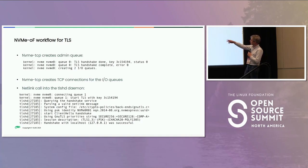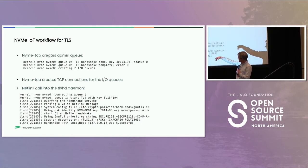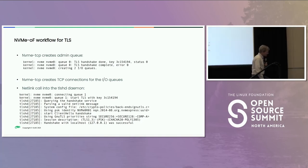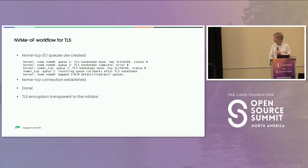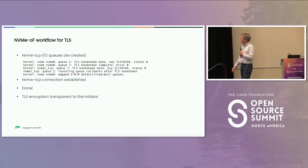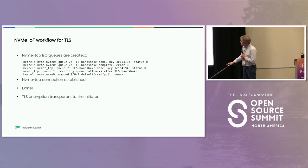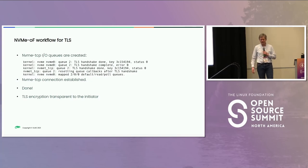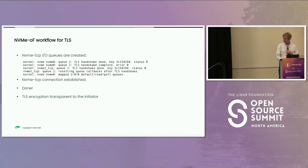For each IO queue, the driver opens the connection, starts TLS, the TLS daemon kicks in, does the handshake, figures out the identity, completes, and passes control back to the kernel. This continues for every IO connection. Once all queues are mapped, everything works just like a normal connection — once TLS is established, it behaves exactly like a normal NVMe connection, completely transparent to the application.